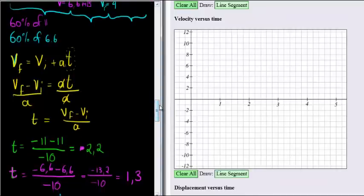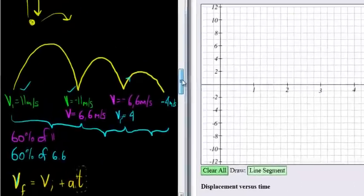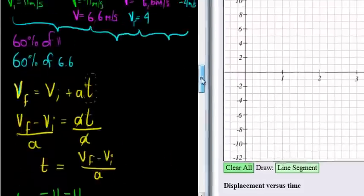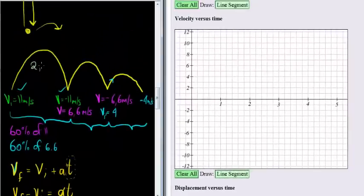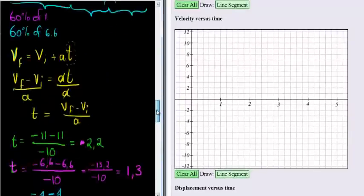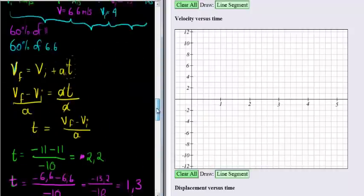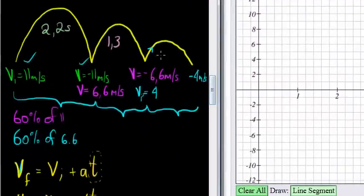I have initial velocity for the first bounce. Let's write the time on here. It will make it easier to draw. So the first time we saw was 2.2 seconds. So this is 2.2 seconds. The second one was 1.3 seconds. This is 1.3 seconds. And the last one was for 0.8 seconds.